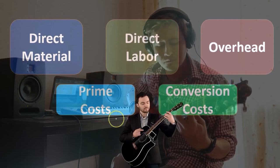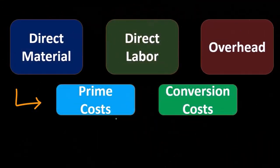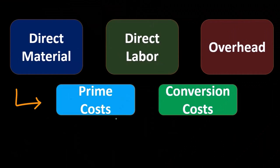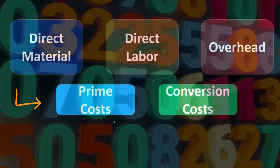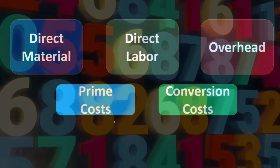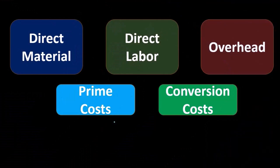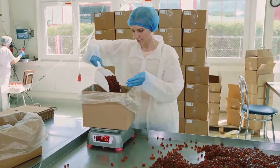If you compare the two, the prime costs are utilizing the same factors as the direct costs, but for different reasons. Prime costs means they're the prime factors of production, the primary expenditures, the ones most associated with the manufacturing of the inventory. So those two are similar.